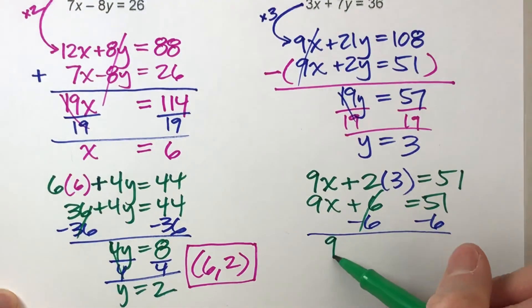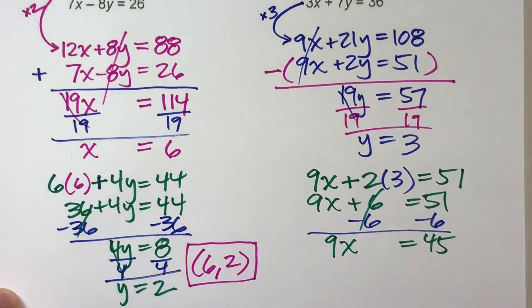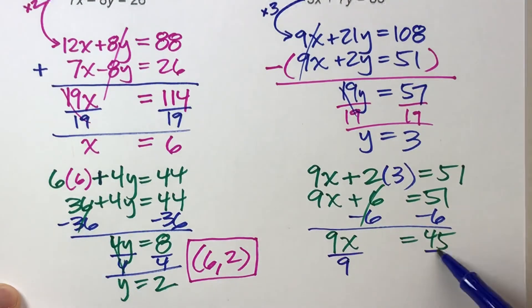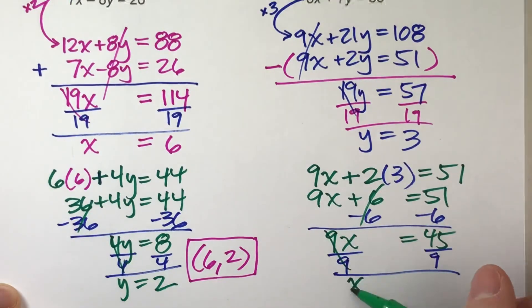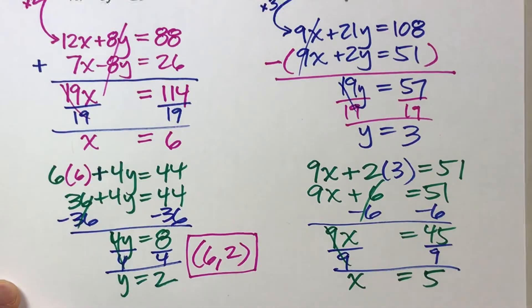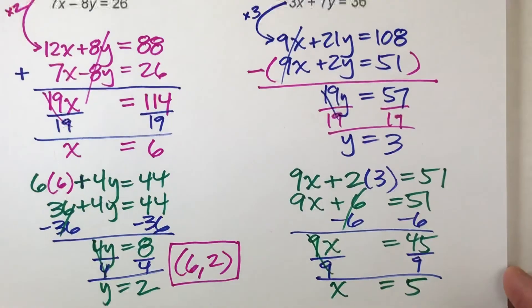If I solve that, I should have it—minus 6 on both sides, I get 9X equals 45. Divide both sides by 9 and I'm gonna get X equals 5.